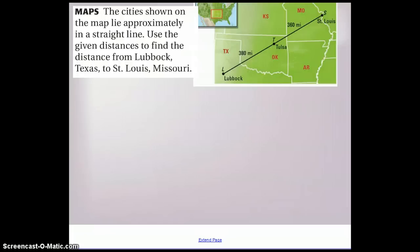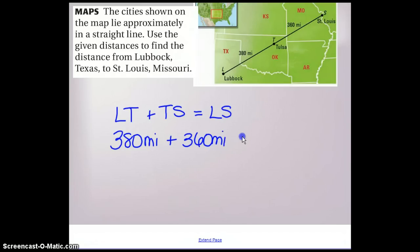We have a real-world example here, pretty straightforward on how the segment addition postulate is used. We say that Lubbock, Texas is located at point L, and St. Louis, Missouri is located at point S, and Tulsa is somewhere between Lubbock and St. Louis, almost in the middle, but not quite. The segment addition postulate tells us that the length of segment LT plus the length of segment TS would be equal to the length of segment LS. By doing a little bit of substitution, we would have 380 miles plus 360 miles to give us the length of LS, and that's going to give us 740 miles from Lubbock to St. Louis.